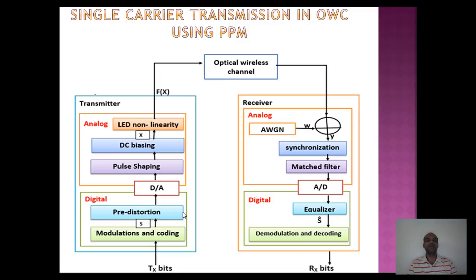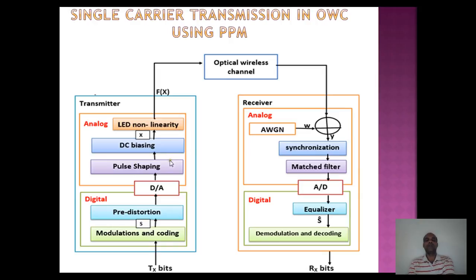The train of symbols is pre-distorted by the inverse of the nonlinear function of the LED transmitter, and scaled by a factor to fit within the front-end optical constraints. The signal is then passed through a digital-to-analog converter to transform the train of digital chips into a train of continuous-time pulses. A pulse shaping filter with a real-valued impulse response V(T) is applied to obtain band-limited signals.